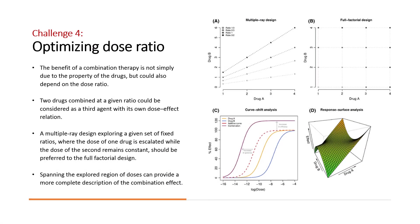The benefit of a combination therapy is not simply due to the properties of the drugs, but could also depend on the dose ratio. As cells do not distinguish between a single drug or a combination, two drugs combined at a given ratio could be considered as a third agent with its own dose-effect relation. Therefore, rather than simply asking whether a particular combination is synergistic, we might do better to consider what dose ratio optimizes the synergy. For this purpose, a multiple-ray design exploring a given set of fixed ratios — where the dose of one drug is escalated while the dose of the second remains constant — should be preferred to the full factorial design. Different dose ratios can then be compared by means of their respective dose-effect curves by applying a curve shift analysis and a 3D response surface analysis.